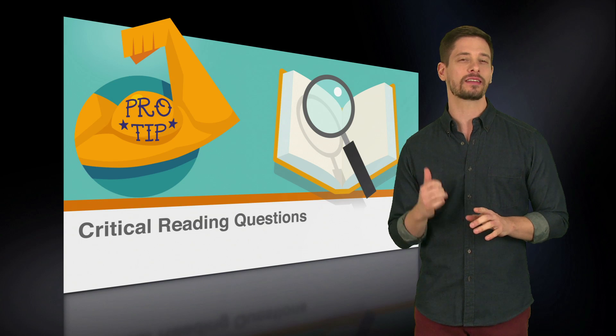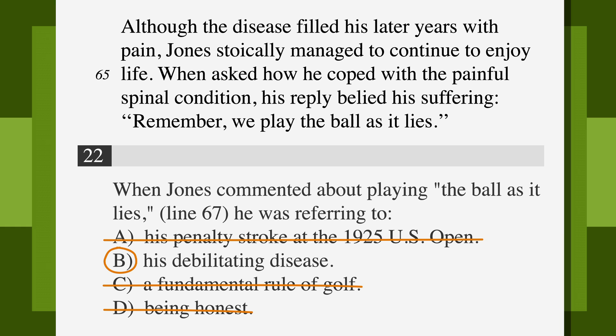For an example, let's go back to that last problem. The question is asking us about playing the ball as it lies on line 67. Answer choice C says this line is referring to a fundamental rule of golf. Playing the ball as it lies is a fundamental rule of golf, so this answer choice seems true, but it doesn't answer the question. This is an example of an answer choice that is true but wrong.